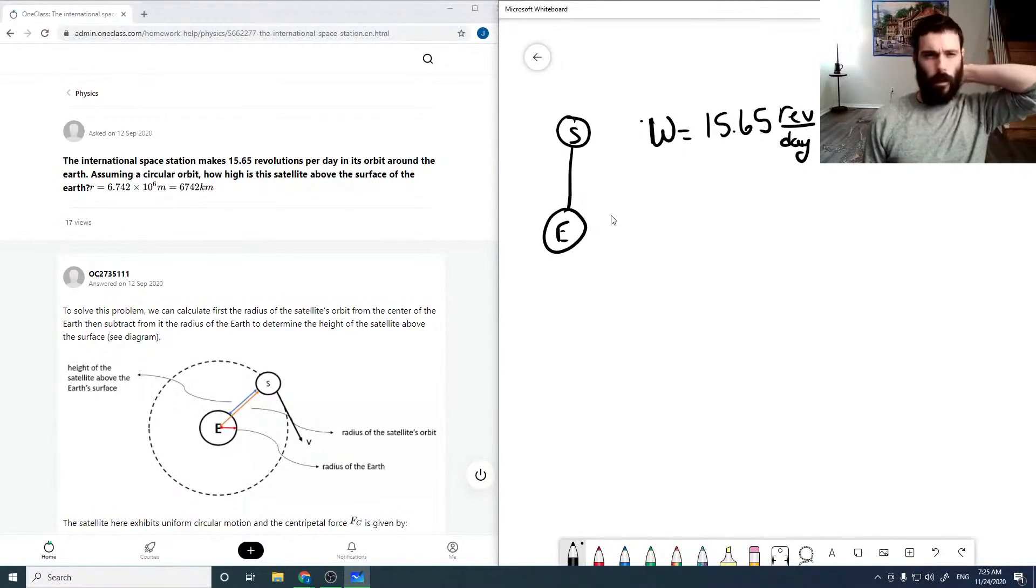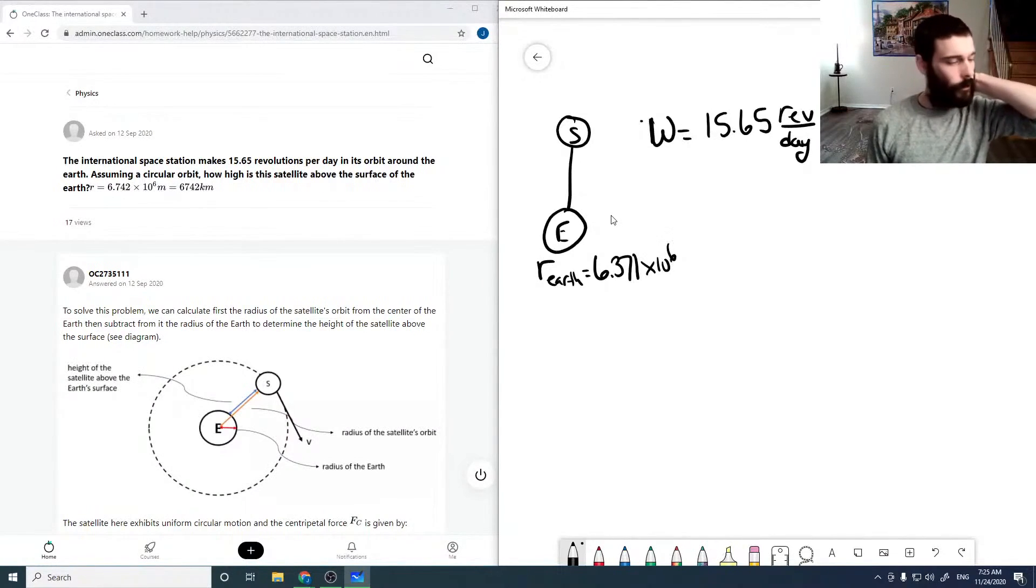I don't know what that R is. That's given in the question there. The radius for Earth is 6.371 times 10 to the 6 meters. So I'm just going to ignore that R.